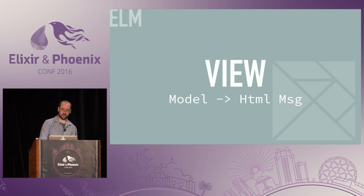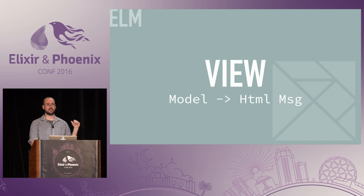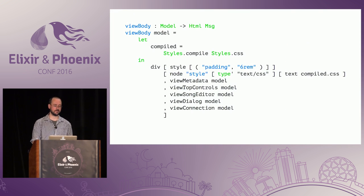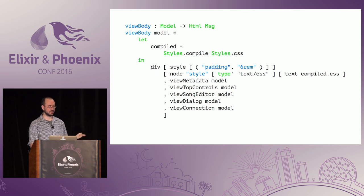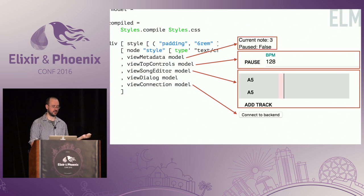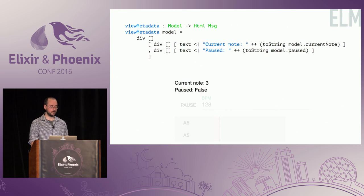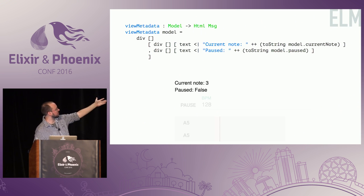The view — as I mentioned — is a pure function that translates your model into an HTML tree, and the user can produce messages in your application by interacting with it. This is the function that handles the primary middle part of our view. We've got some basic styles being injected, and you can see the pieces rendered as children of the parent div. We view metadata — that's the top bit. The top controls are the pause and BPM controls. The song editor is that piece with the tracks and the add-track button. Then the connection is that button. So view metadata is super easy — just generating HTML. It's a div. The second argument is a list of attributes, the third is a list of children.